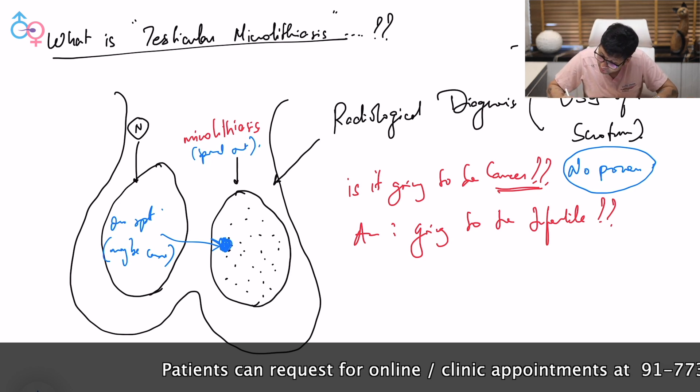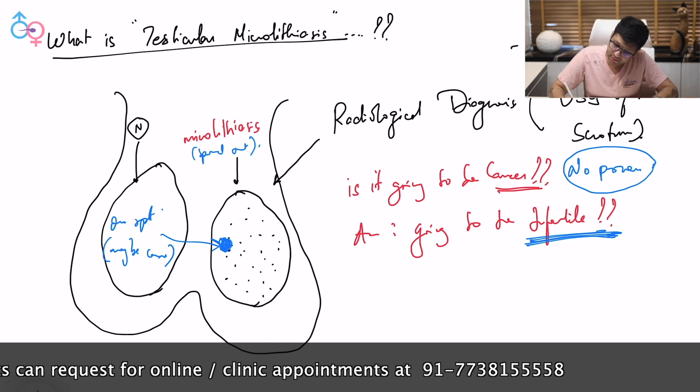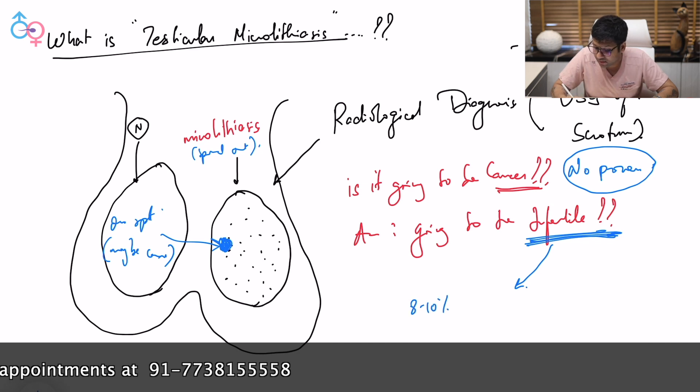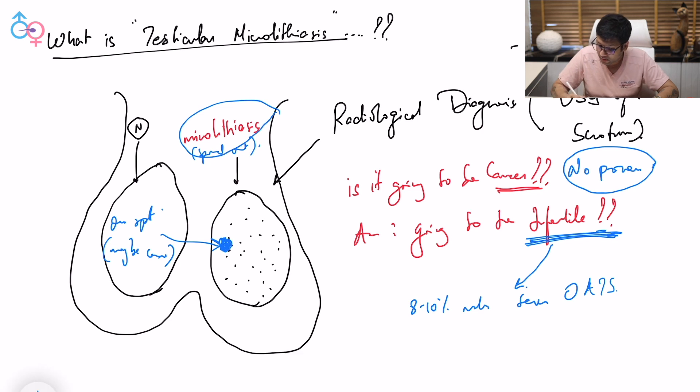Am I going to be infertile in this situation? Please let us answer this. Approximately in 8 to 10 percent of males who are having severe oligoasthenozoospermia, teratozoospermia, we may see microlithiasis. But again, there is no proven association. There is no proven association of this thing with infertility as well.